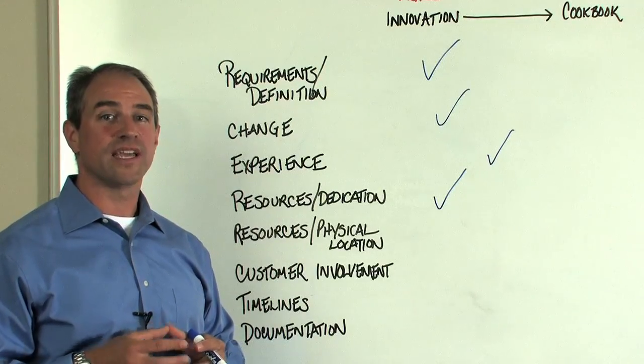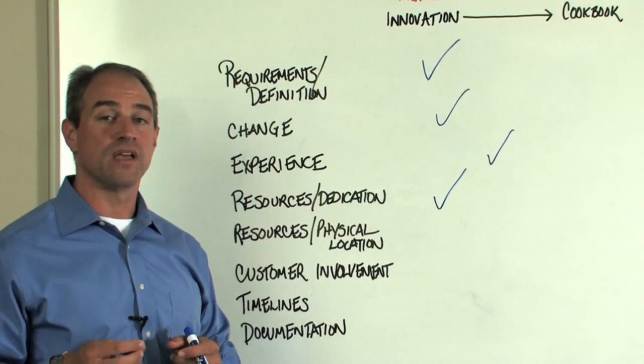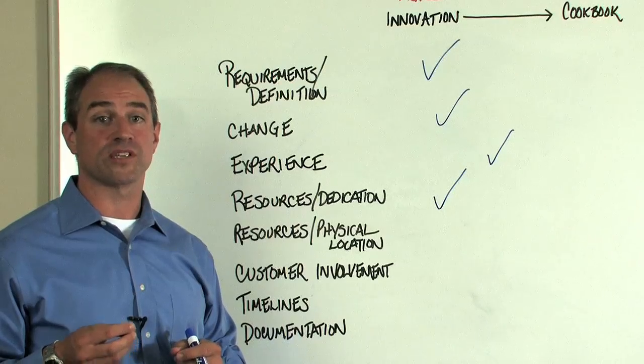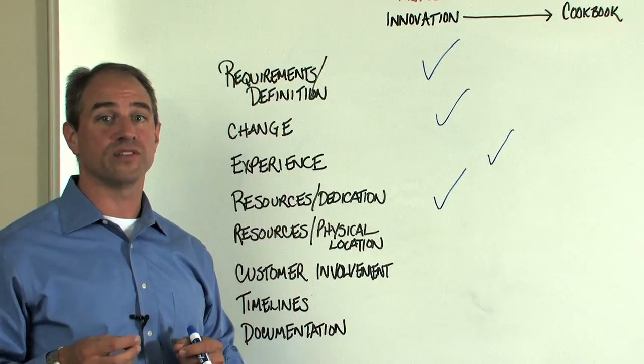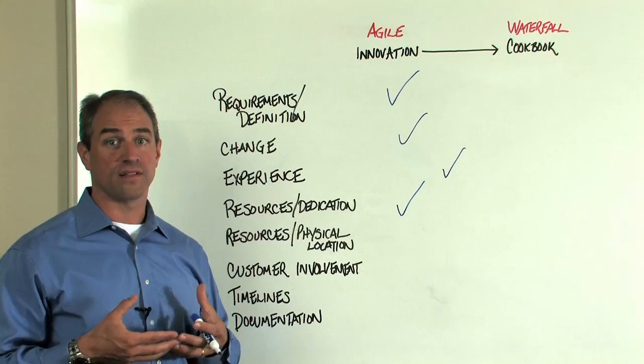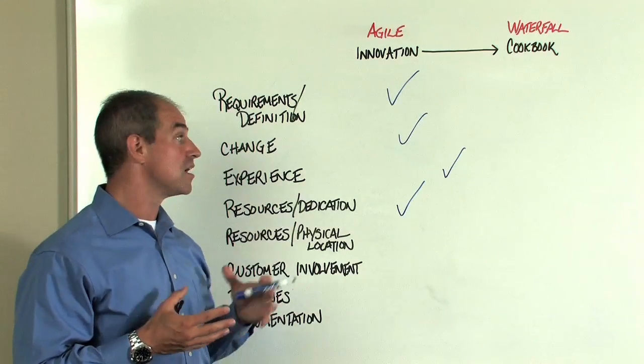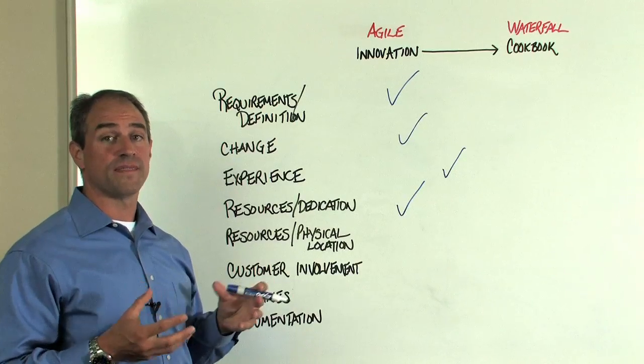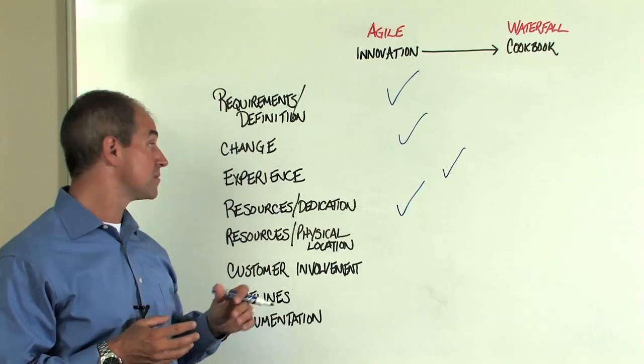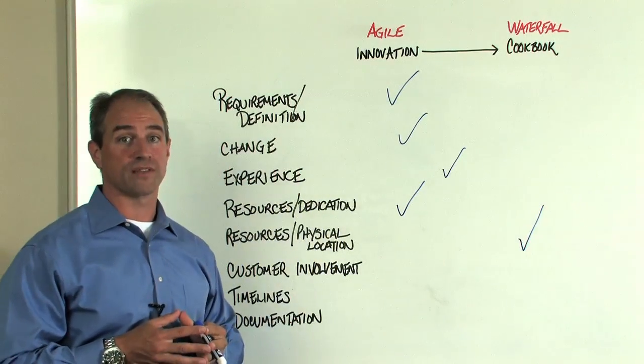The physical location. Can these resources be co-located in the same location? I know a lot of us have worked in environments where we've got distributed networks and we may have resources that are even offshore. How are we going to deal with that type of an environment? How are we going to bring those resources together? That's a challenge that we have to deal with and is a significant consideration. Let's say for this example that we have resources that are distributed and that we do have some offshore resources that we need to include. So we may be closer towards a cookbook approach on that one.